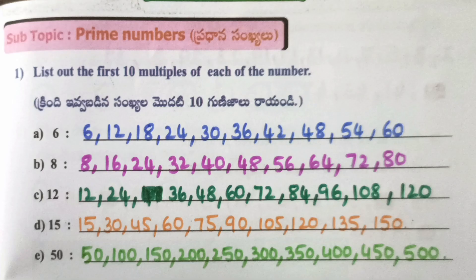Worksheet 15: List out the first 10 multiples of each number. A. 6: 6, 12, 18, 24, 30, 36, 42, 48, 54, 60.